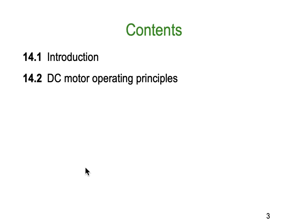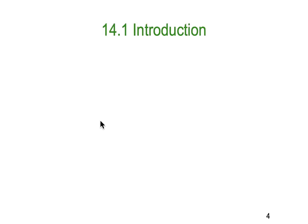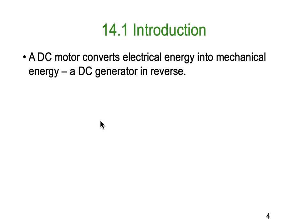If you're following along in the textbook, it's chapter 14.1 and 14.2 in Electrical Trade Principles by Phillips. A DC motor converts electrical energy into mechanical energy, and a DC generator does exactly the reverse — turning mechanical energy into electrical energy, which we already looked at.